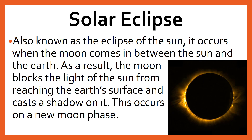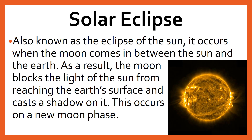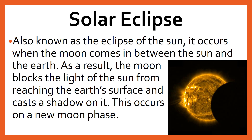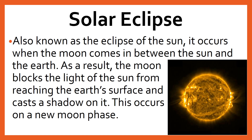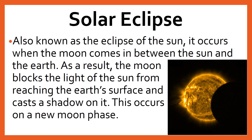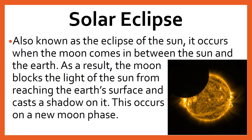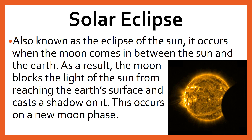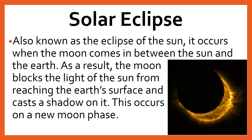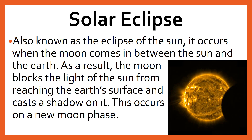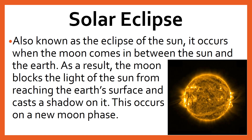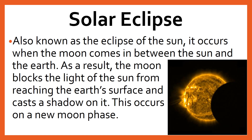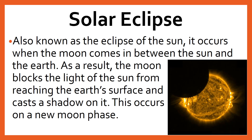Solar eclipse, also known as the eclipse of the sun, occurs when the moon comes in between the sun and the earth. As a result, the moon blocks the light of the sun from reaching the earth's surface and casts a shadow on it. This occurs on a new moon day. We can observe up to five solar eclipses per year.